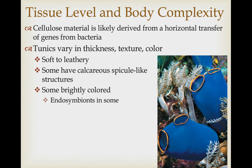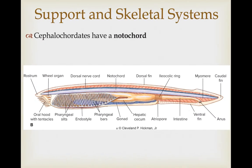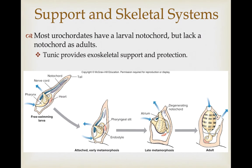Some tunicates are really brightly colored, and this is associated with the endosymbionts that live in some of them. Cephalochordates have a notochord as their main support structure — this pliable support rod running the length of the body. Most urochordates have a larval notochord in the tadpole-larval phase, but they lack the notochord as adults. In that case, the tunic on the outside provides a little bit of exoskeletal support and protection.